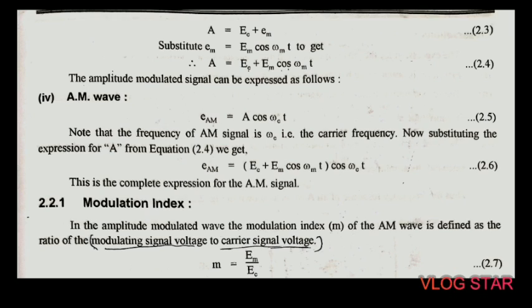Using the carrier frequency and the modulating signal, we can create a new mathematical expression for the complete modulated wave. Keeping in mind that the modulating signal value adds to or subtracts from the peak value of the carrier, the instantaneous value of the top or bottom envelope of the AM signal can be written as follows: instantaneous value of the envelope of the AM wave is A = E_c + e_m.